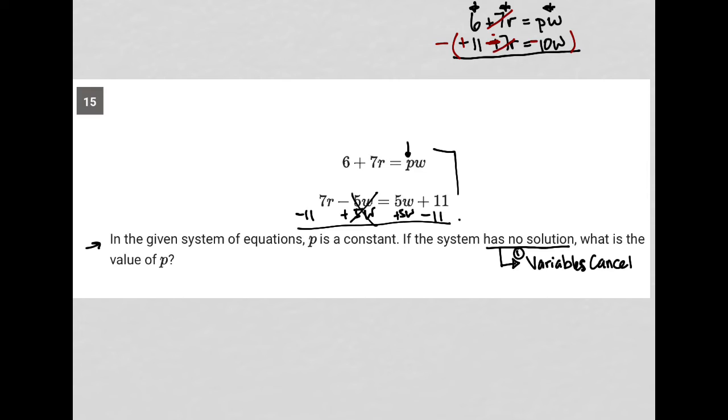By subtracting the second equation from the first, I have 6 + 11, which is 17. My R values are gone. This equals PW - 10W.